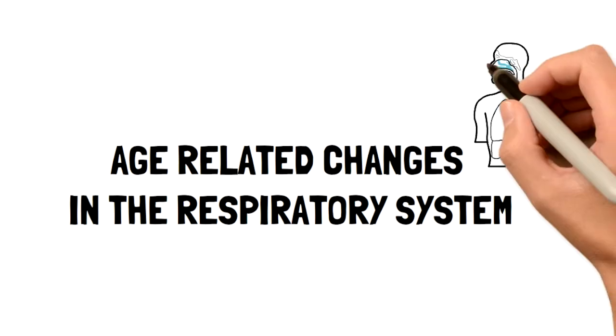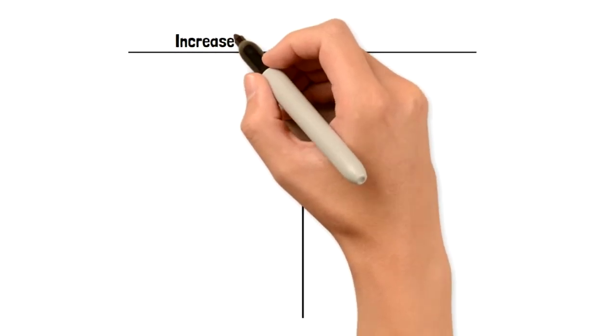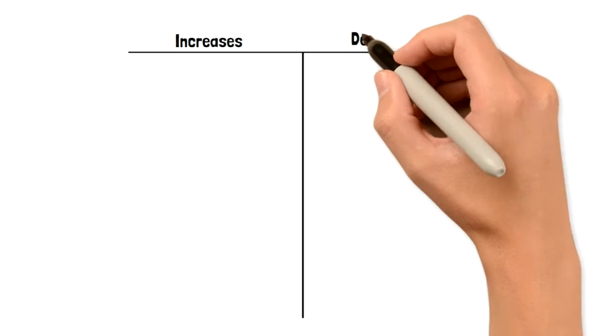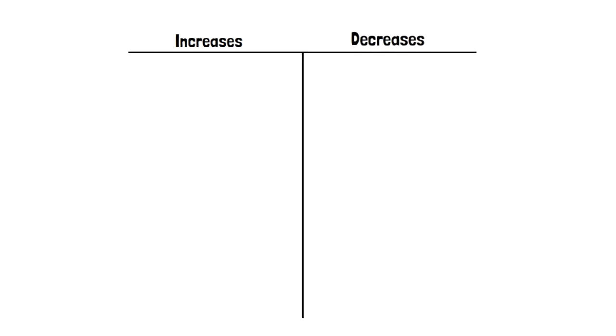Let's conceptually divide this into things that increase and things that decrease. Factors that will be increased as you age and factors that will be decreased as you age. Let's talk about increases first.